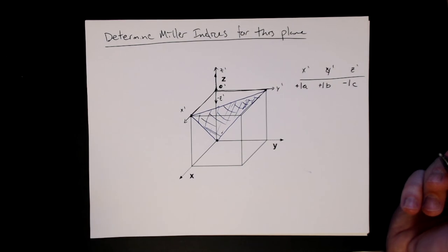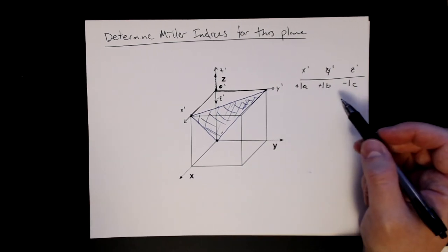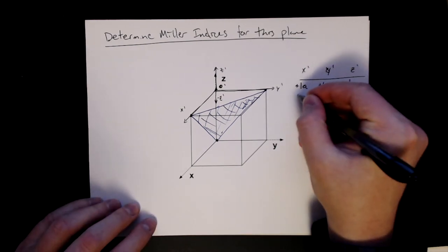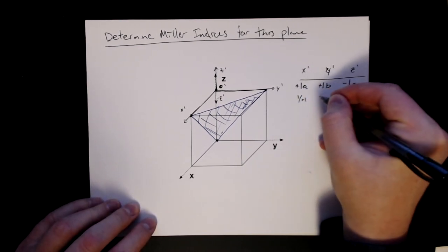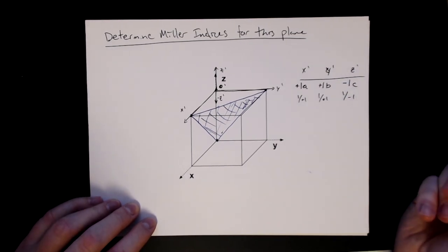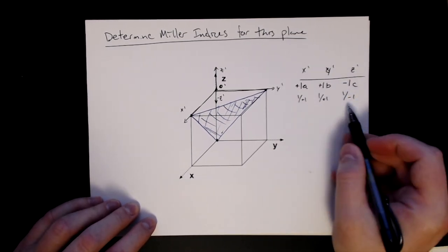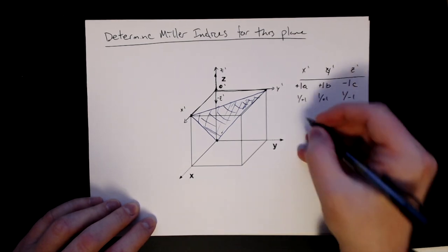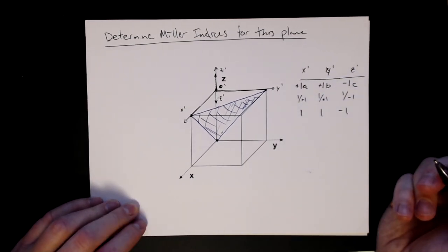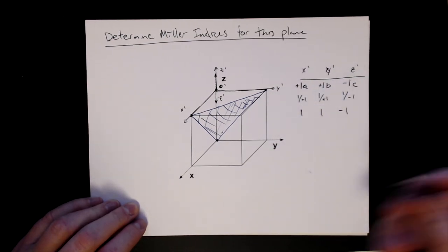Now I need to take the reciprocals. So 1 over plus 1, 1 over plus 1, 1 over minus 1. So in this case, they're all the same. We'd have 1, 1, negative 1. So it hasn't changed that. But still just do it as an exercise.